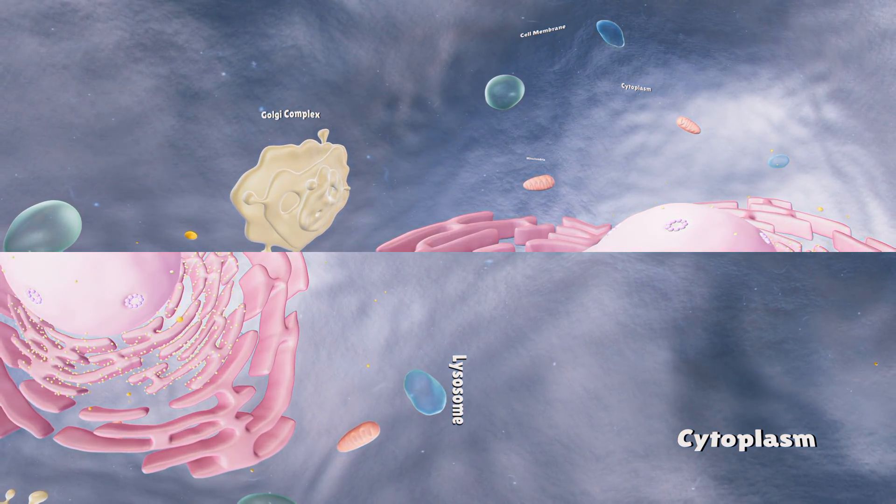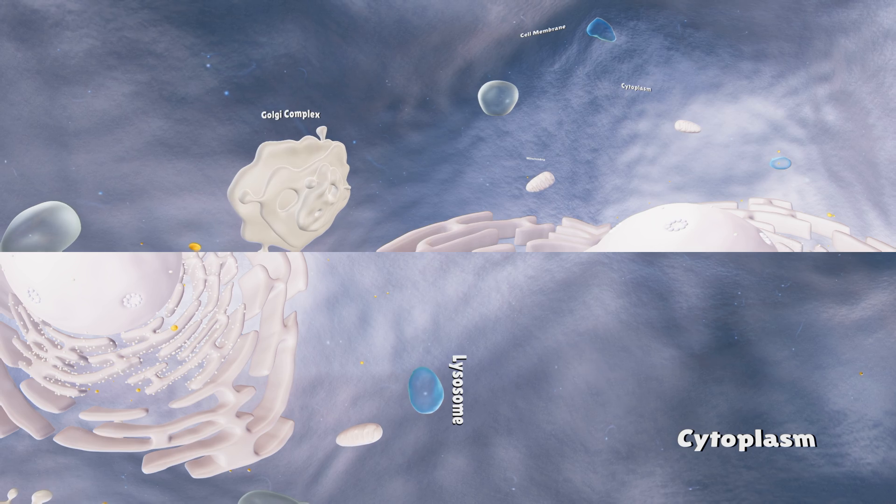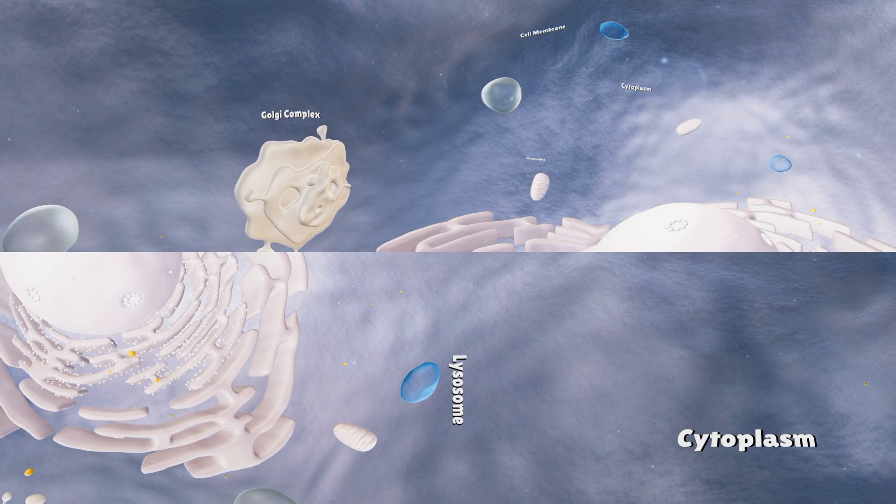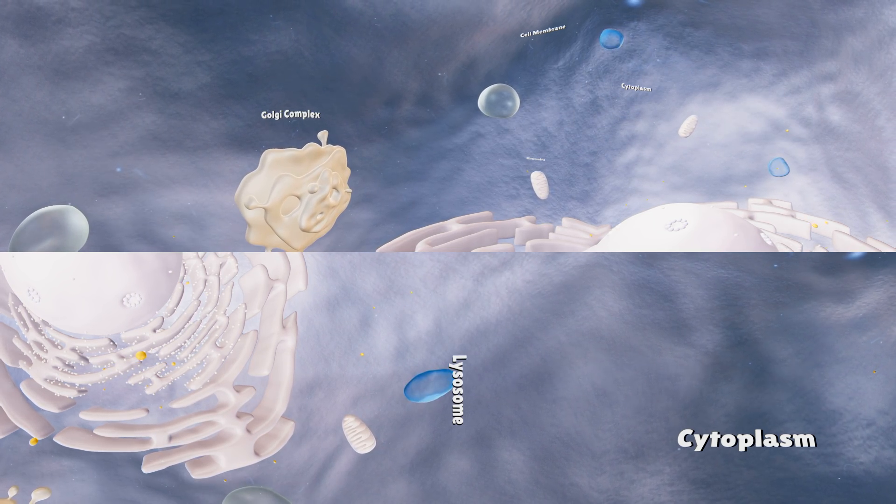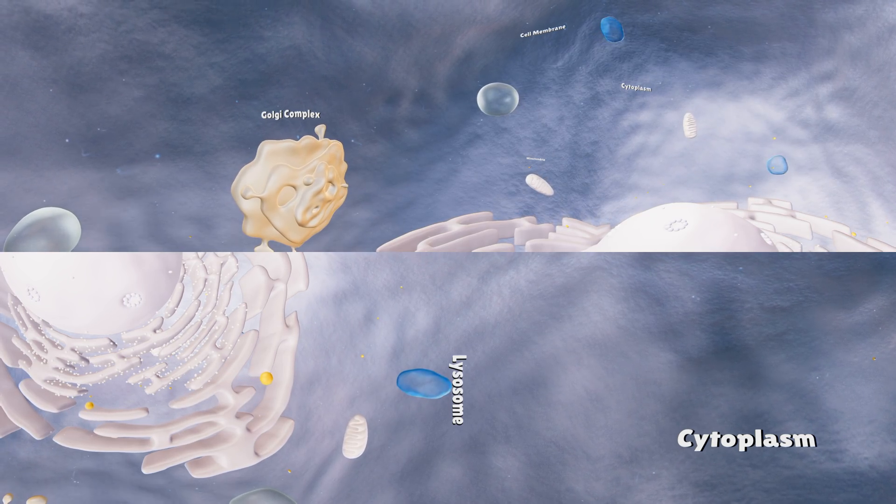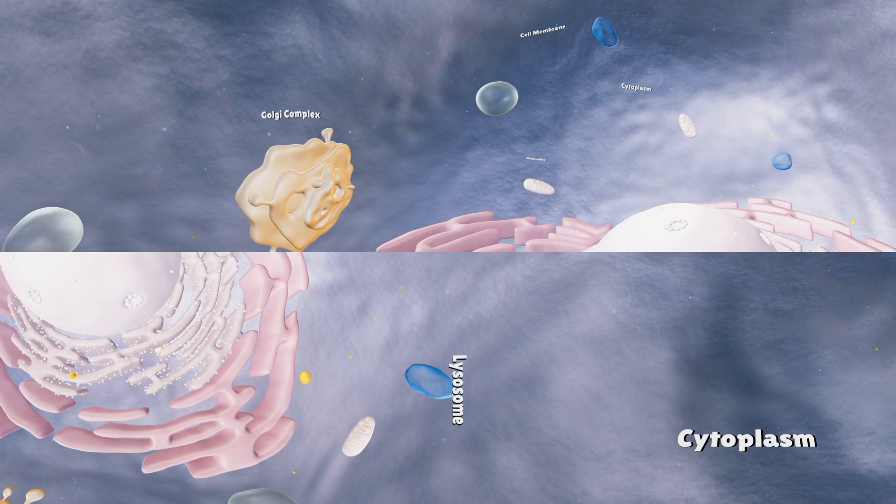The rounded, floating bodies we see here are lysosomes. They are created by the Golgi apparatus. They're nicknamed the clean-up crew of the cell. They help break down large molecules into smaller pieces that the cell can actually use.